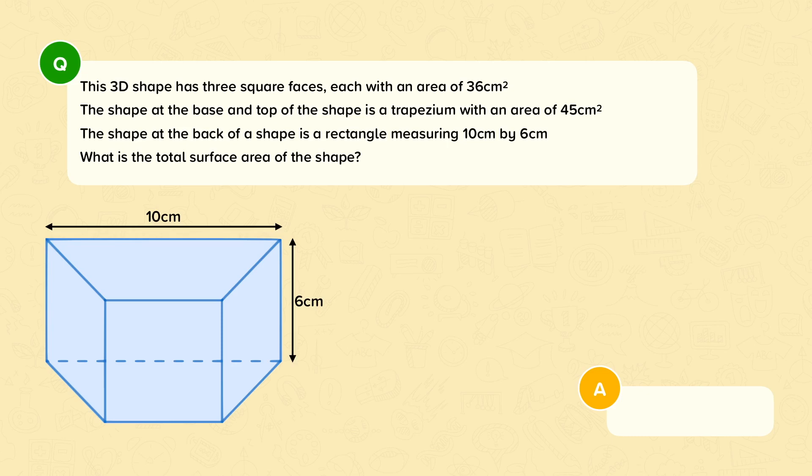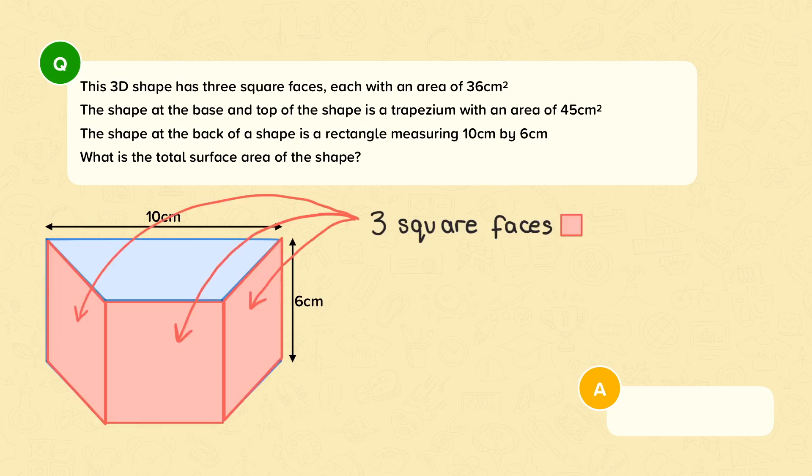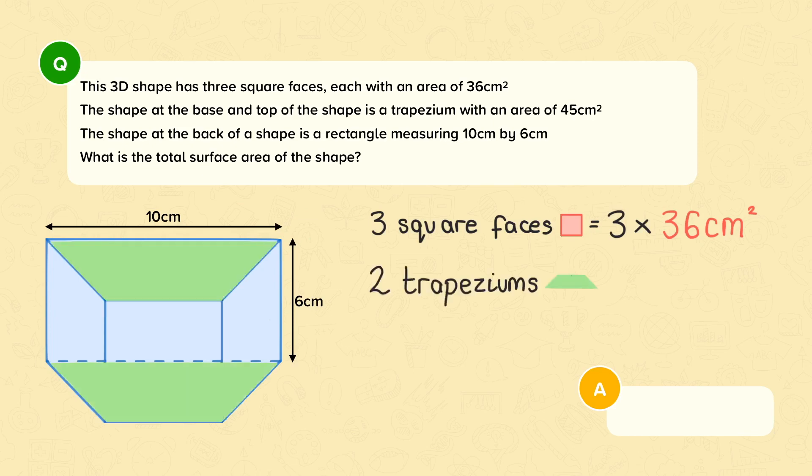We know that we have three square faces, each with an area of 36cm squared. We have the trapeziums at the top and the bottom of the 3D shape, which is 45cm squared, and the rectangle.